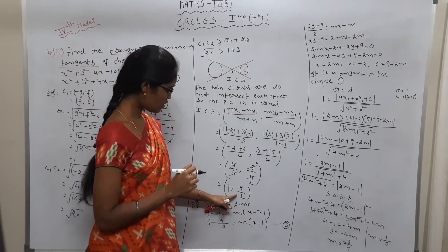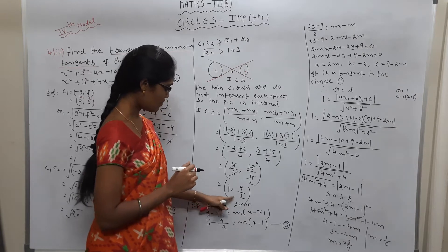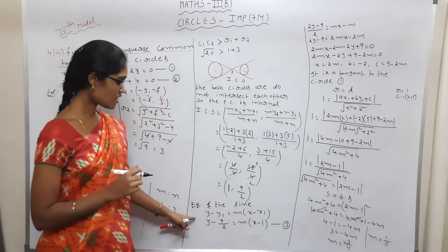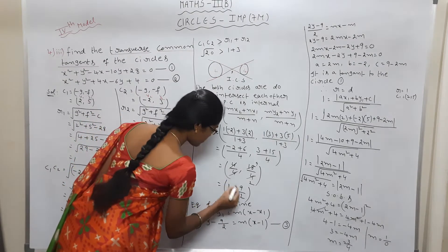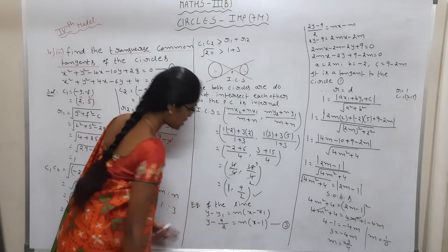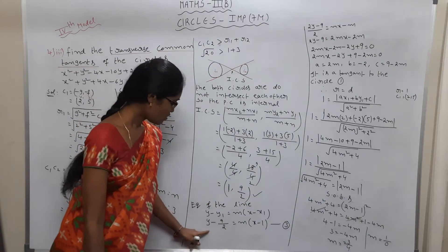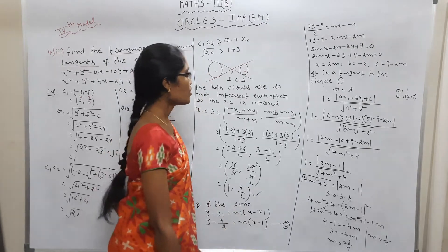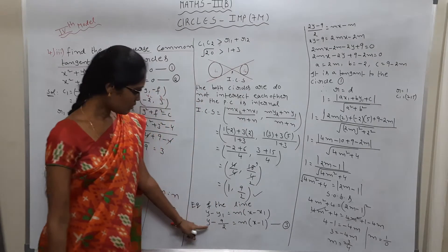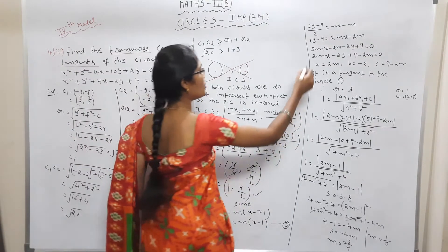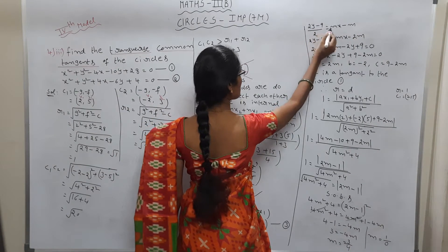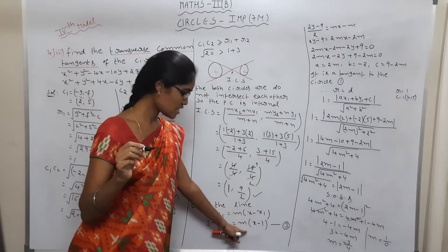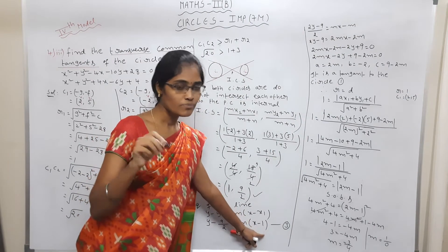Next, the equation of the line through that point: y − y1 = m(x − x1). Using the point (1, 9/2), we write y − 9/2 = m(x − 1). Taking LCM as 2: 2y − 9 = m(x − 1) × 2, which simplifies to 2y − 9 = 2mx − 2m.